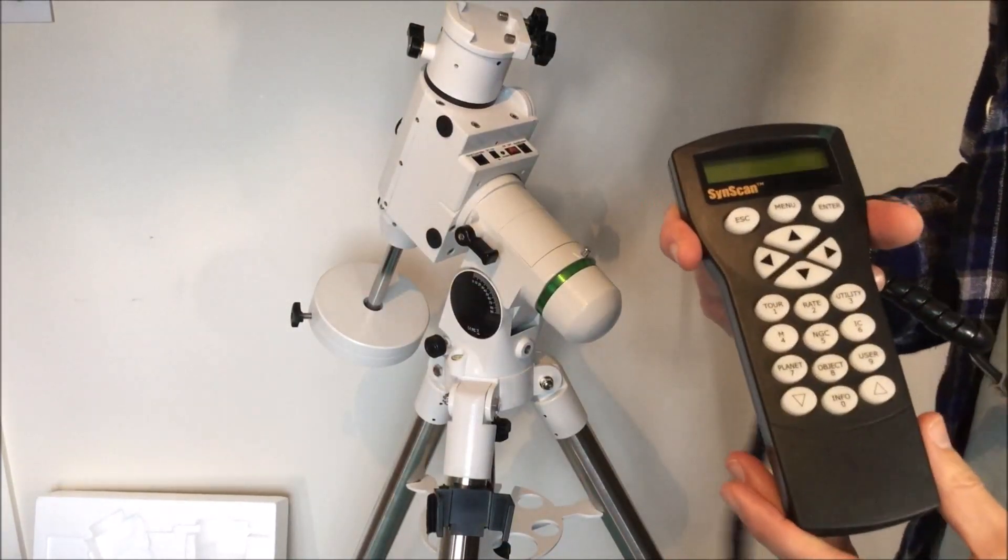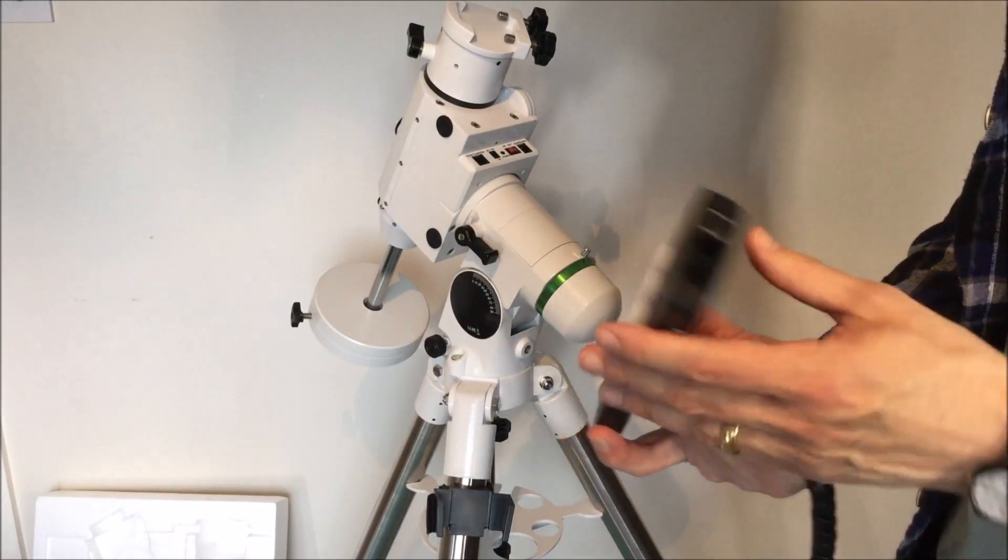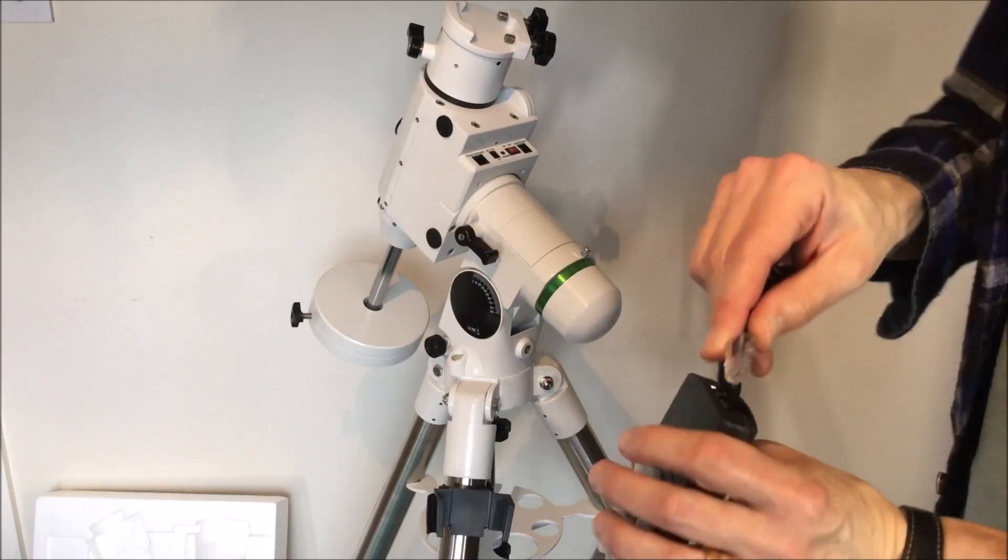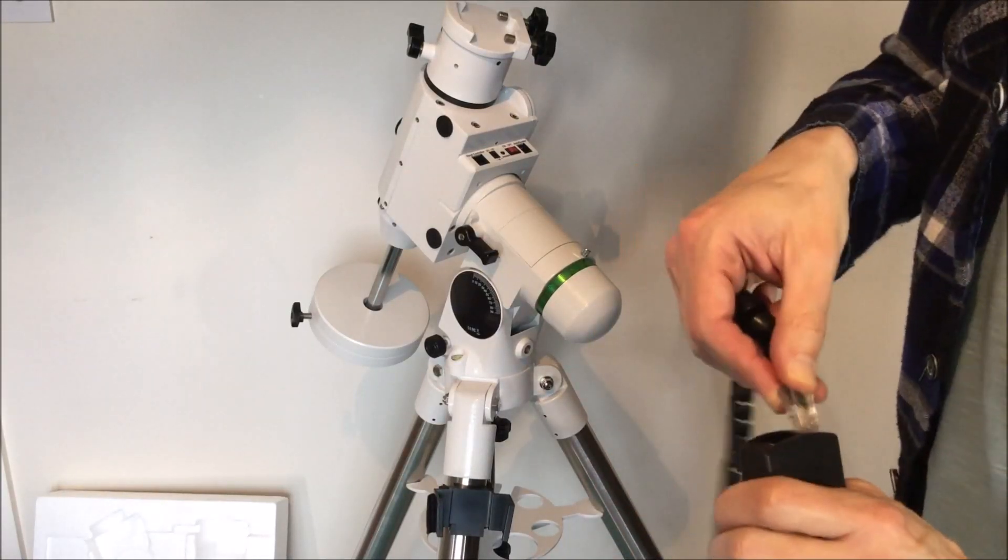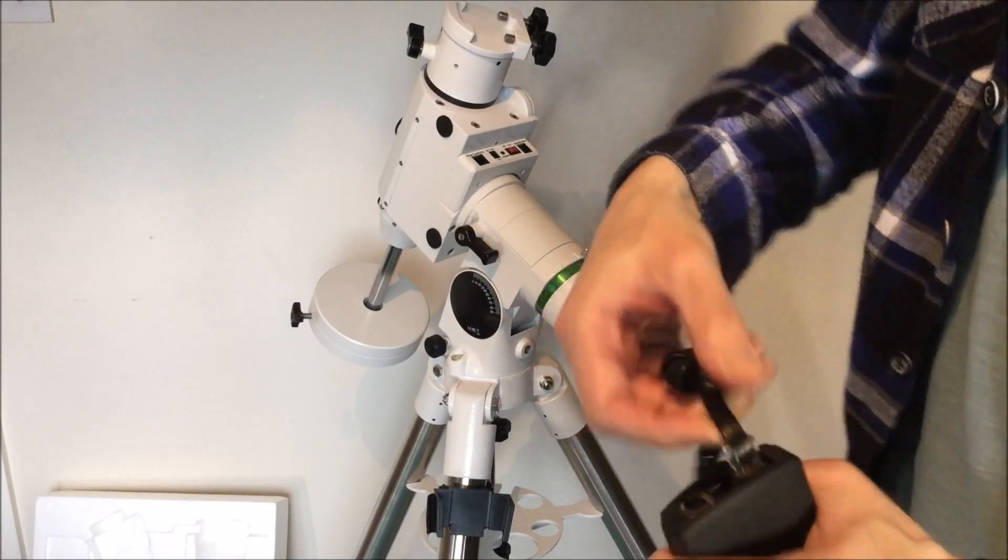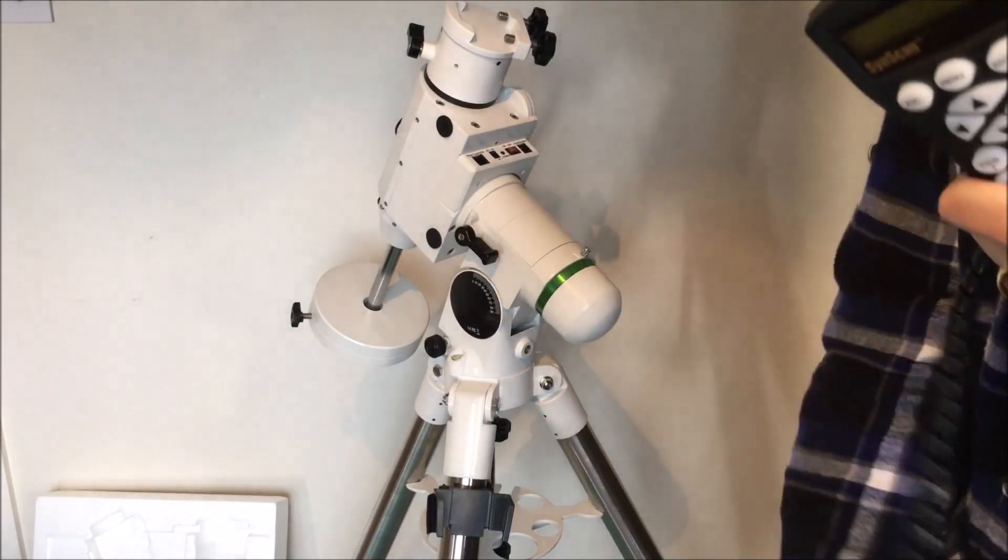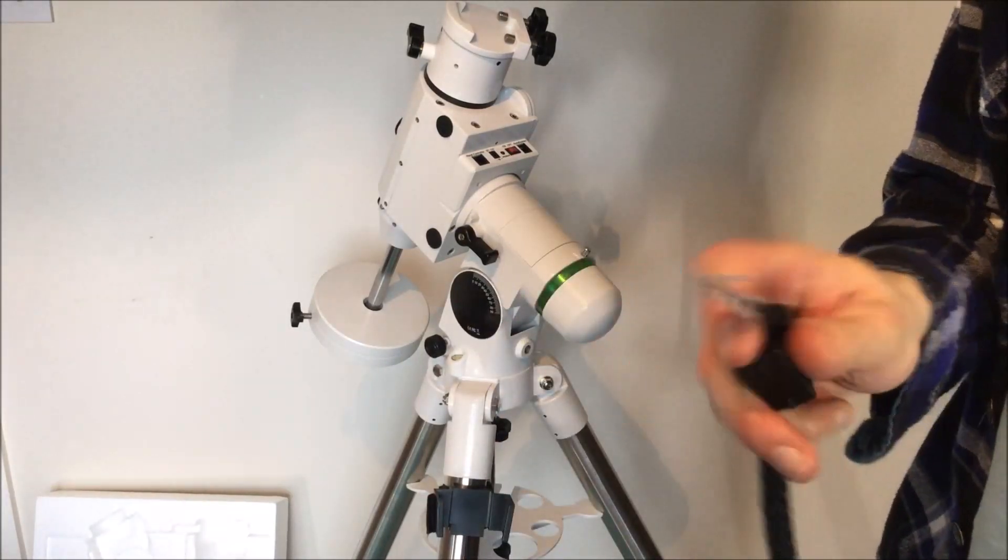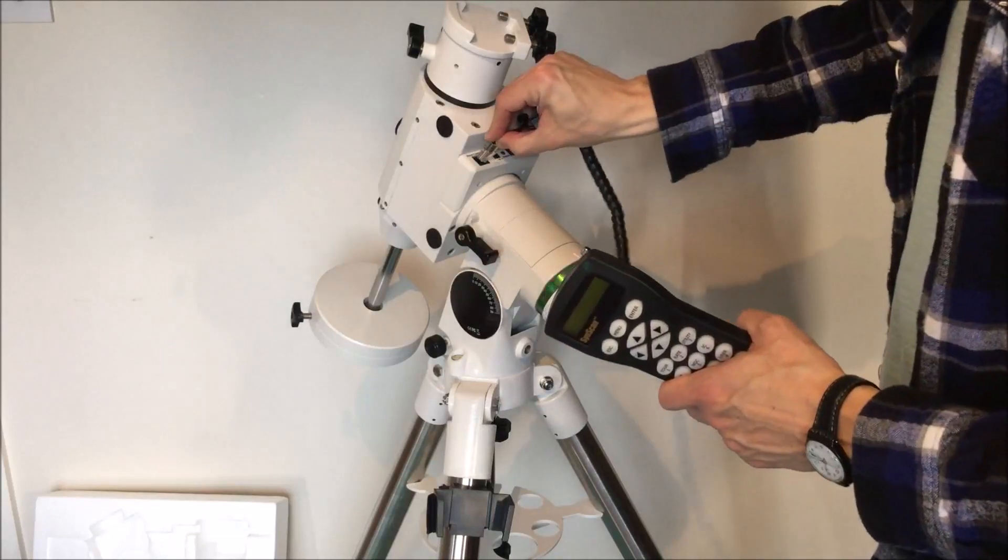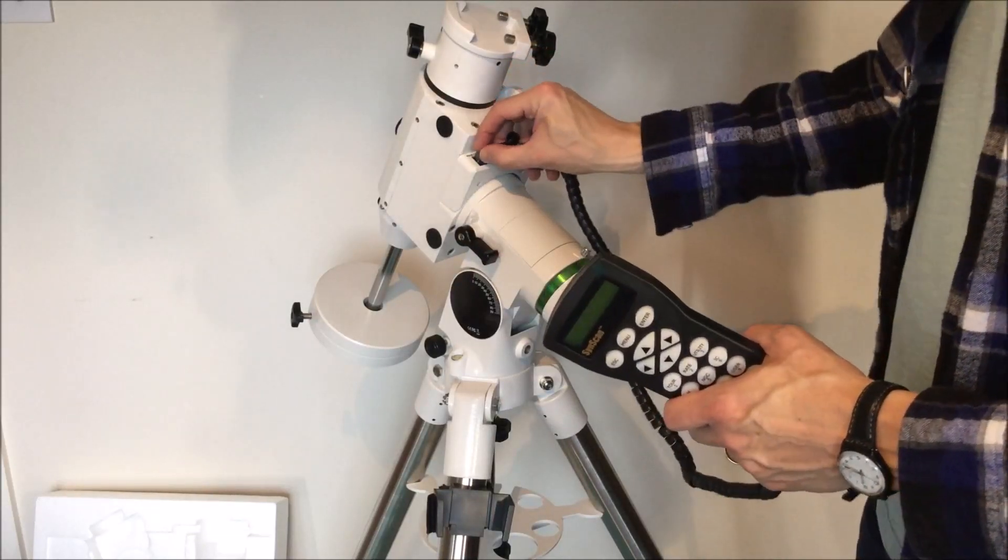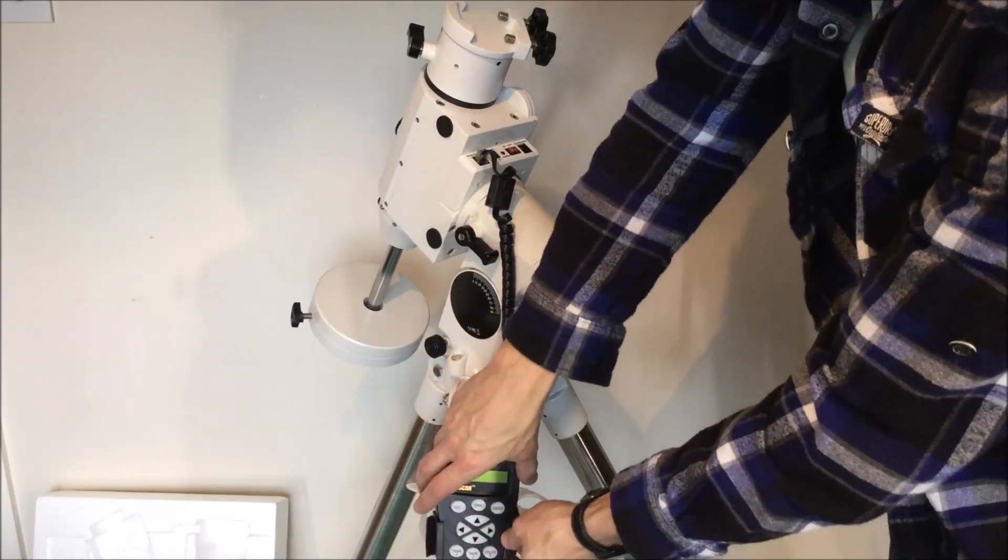The hand controller itself comes with a cable which you can click into the bottom of the hand controller. And then a similar connector at the other end which goes into the mount. And then you can put the controller onto the bracket.